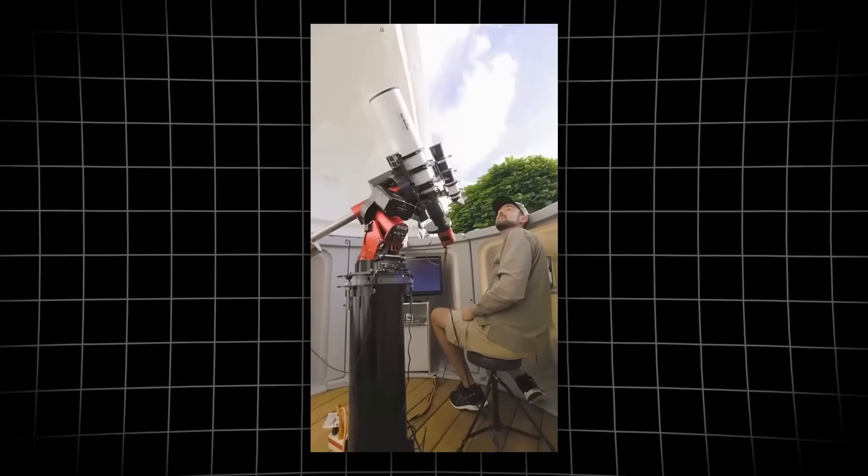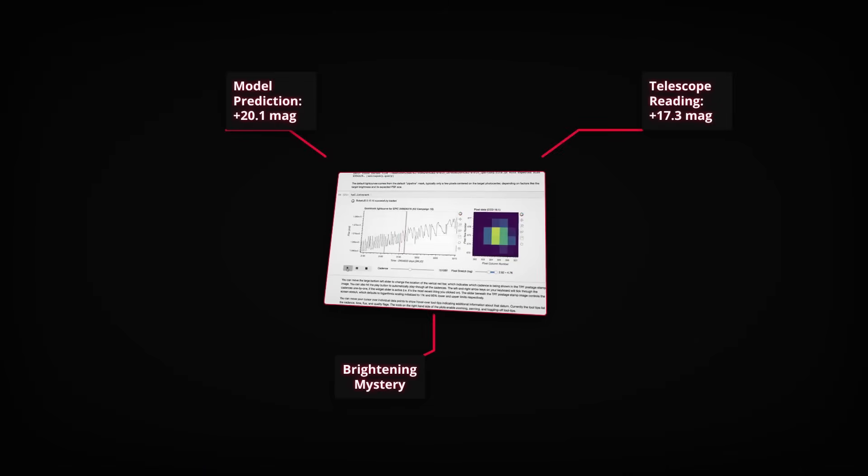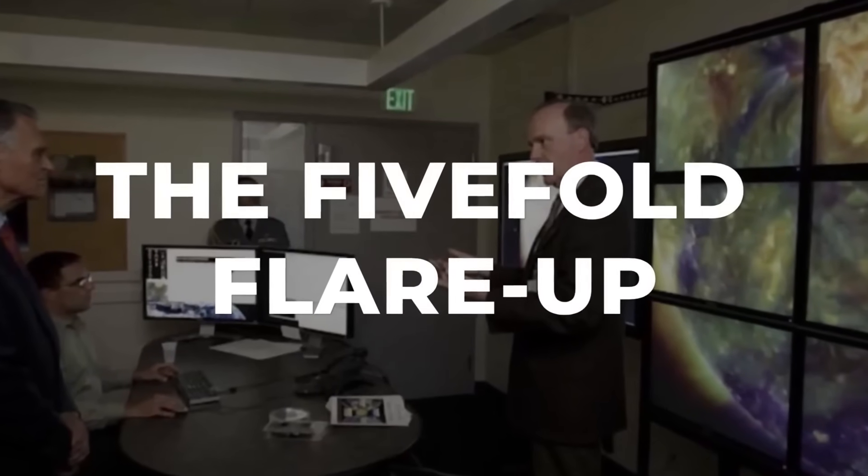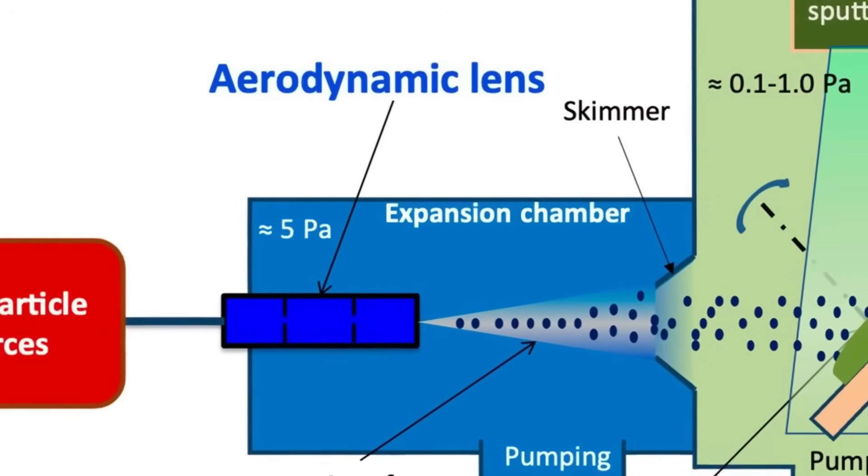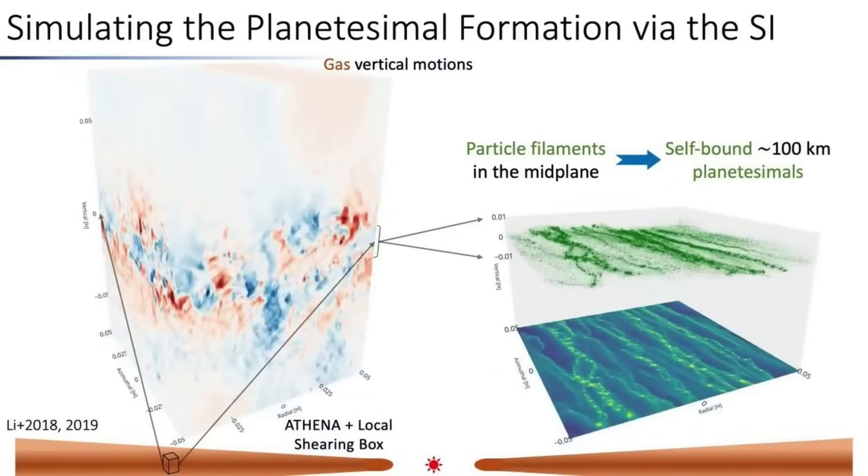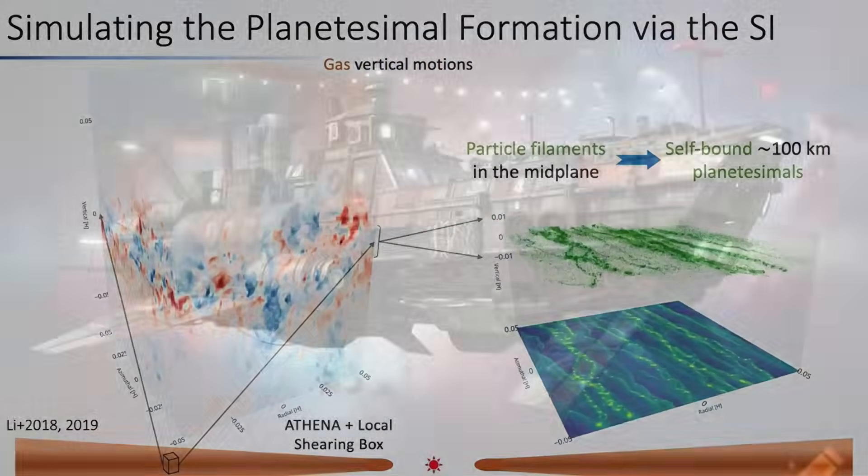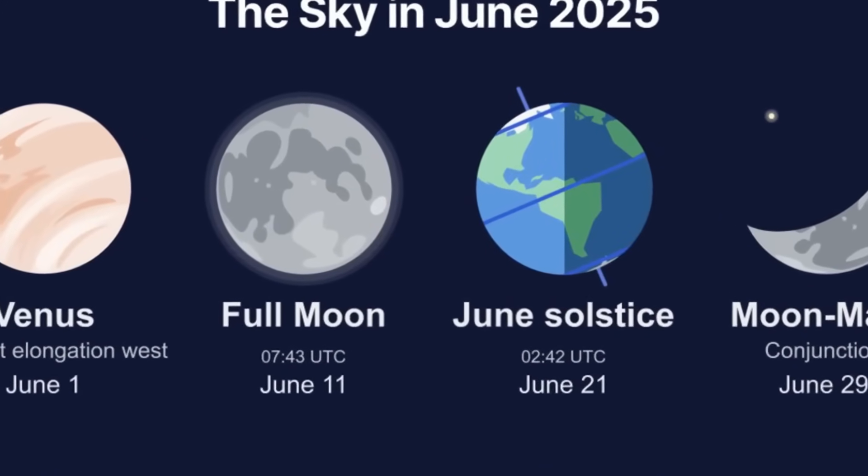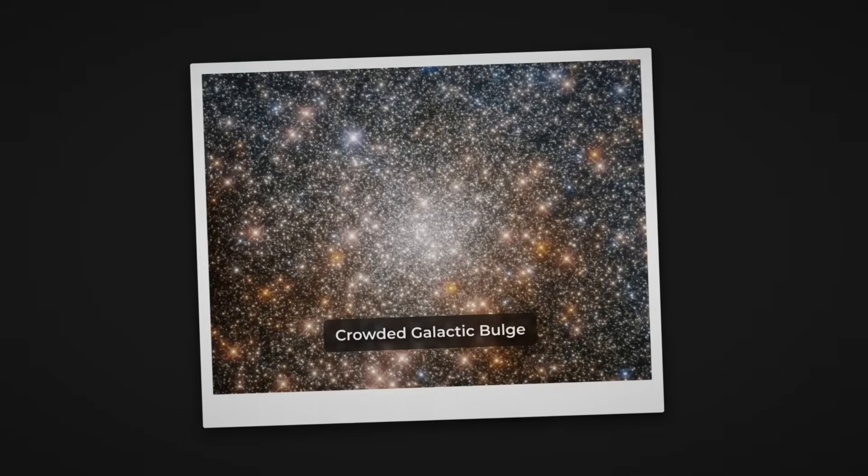Amateurs armed with backyard telescopes, CCD cameras, and open source software sift through vast amounts of archival data, filling in gaps between professional survey passes. They stitch together nightly exposures, build early light curves, and sometimes spot anomalies that automated systems miss. Their contributions have already proven crucial. Without them, the early five-fold brightening of Atlas would have remained hidden for weeks.